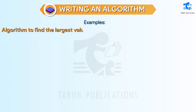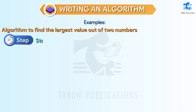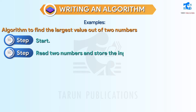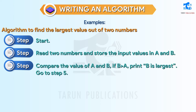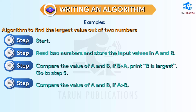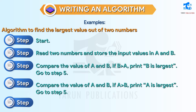Algorithm to find the largest value out of two numbers. Step 1: Start. Step 2: Read two numbers and store the input values in A and B. Step 3: Compare the value of A and B. If B > A, print B is largest. Go to Step 5. Step 5: Stop.